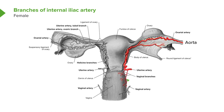From the uterine artery we have vaginal branches supporting the vaginal artery. We can see the vaginal artery as a direct branch from the internal iliac. In the male it's the inferior vesical; in the female it's the vaginal artery, specifically supplying the vagina. So in the female we have branches from the internal iliac — uterine artery, its vaginal branches, and the vaginal artery — as well as branches from the aorta where we have the ovarian artery.